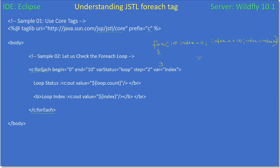So if you see here, everything is tags and attributes. The tag is forEach and we are prefixing it with C, which means we are stating that the forEach tag and its definitions are available here. The attributes we are using are: begin equal to 0, end equal to 10, varStatus equal to loop, and step equal to 2.